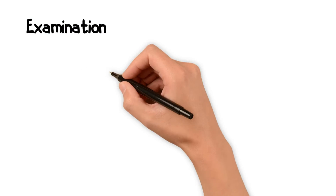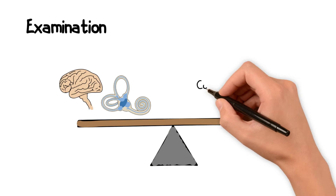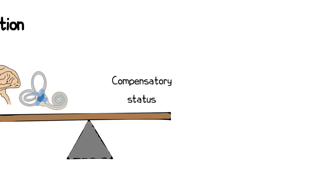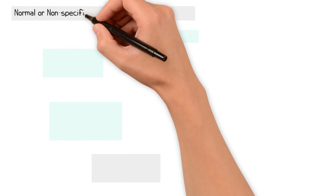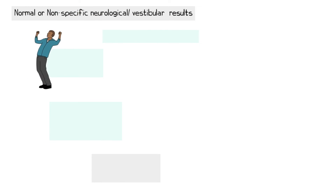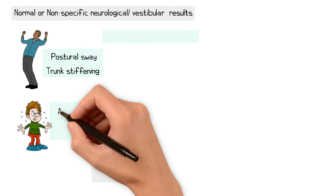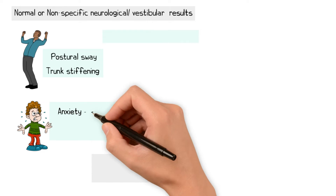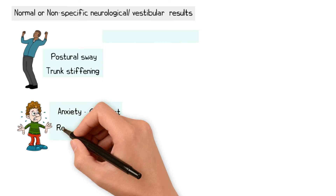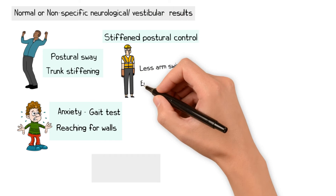Clinical examination aims to assess for any other vestibular or neurological causes of the disequilibrium, along with assessing the patient's compensatory status. Findings may include normal or non-specific results on standard neurological and vestibular tests, an increased postural sway or stiffening of the trunk during balance tests such as Romberg's, and anxiety or hyper-vigilance about balance or movement observable during gait assessment, including behaviours such as reaching for walls while walking. Patients may also have stiffened postural control, with reduced arm swing and an en-bloc movement of their trunk and head.